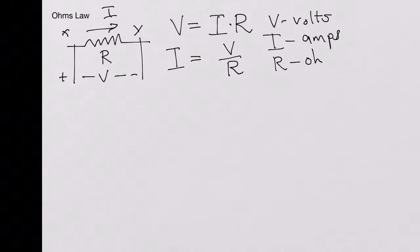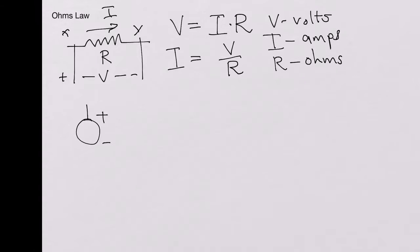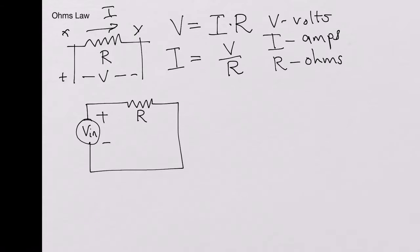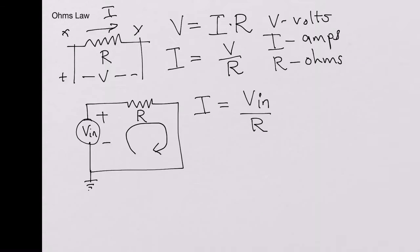Now look at a simple circuit: connect a DC source of value V_in across a resistor of value R and complete the circuit with ground. A current flows through the circuit, and that current I is equal to V_in over R. For example, say V_in is 3 volts and the resistor R is 1.5 kilo-ohms, or 1500 ohms.